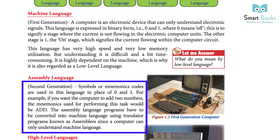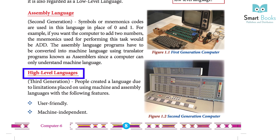Assembly language (second generation language): symbols or mnemonic codes are used in place of 0 and 1. For example, if you want the computer to add two numbers, the mnemonic used would be ADD. Assembly language programs have to be converted into machine language using translator programs known as assemblers, since the computer can only understand machine language.